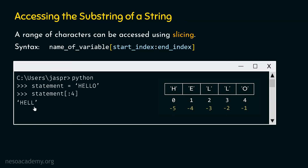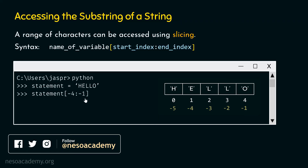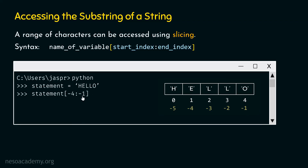We can also provide negative indices. For example: statement, opening square bracket, minus 4, colon, minus 1, then closing square bracket. Minus 4 is the index of E and minus 1 is the index of O. Since the end index character is not included, we start from minus 4 and go up to minus 2, not minus 1. If we hit enter, we will get ELL as a result.